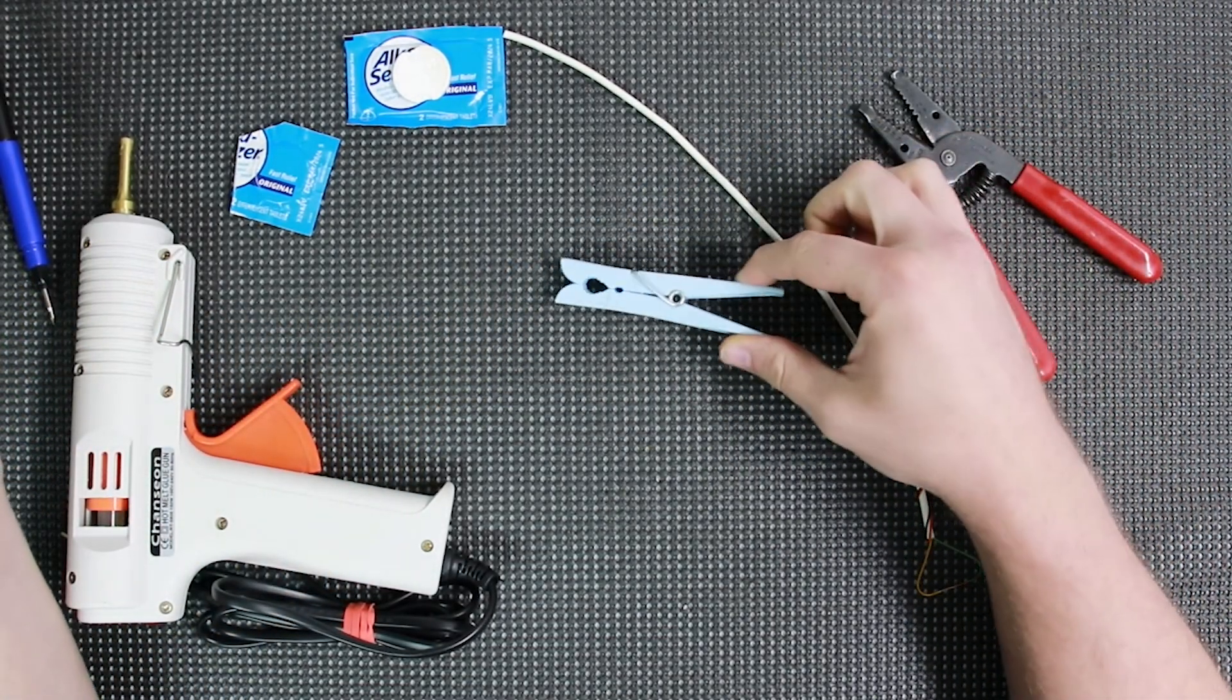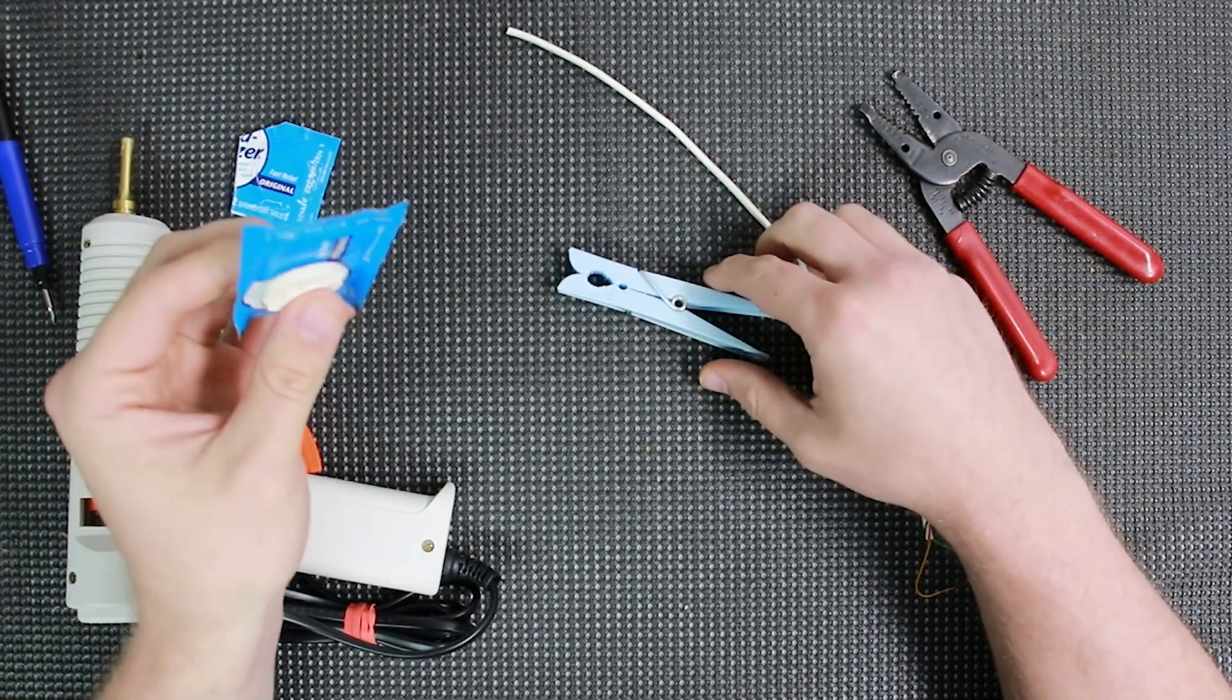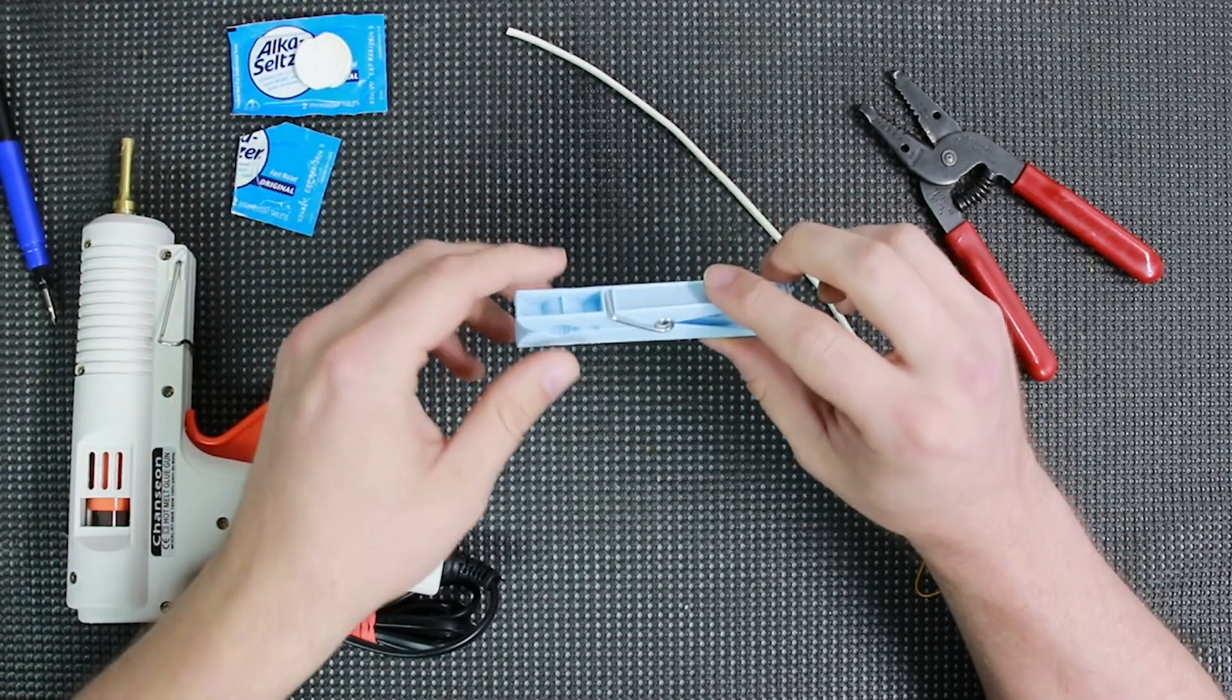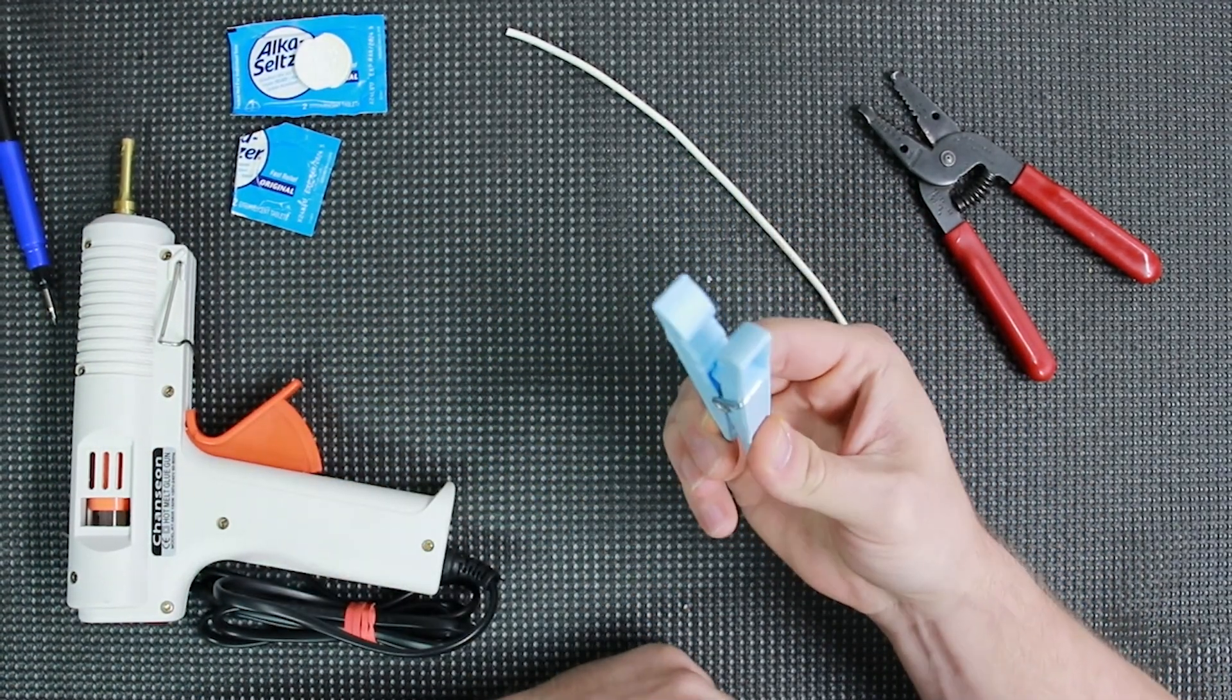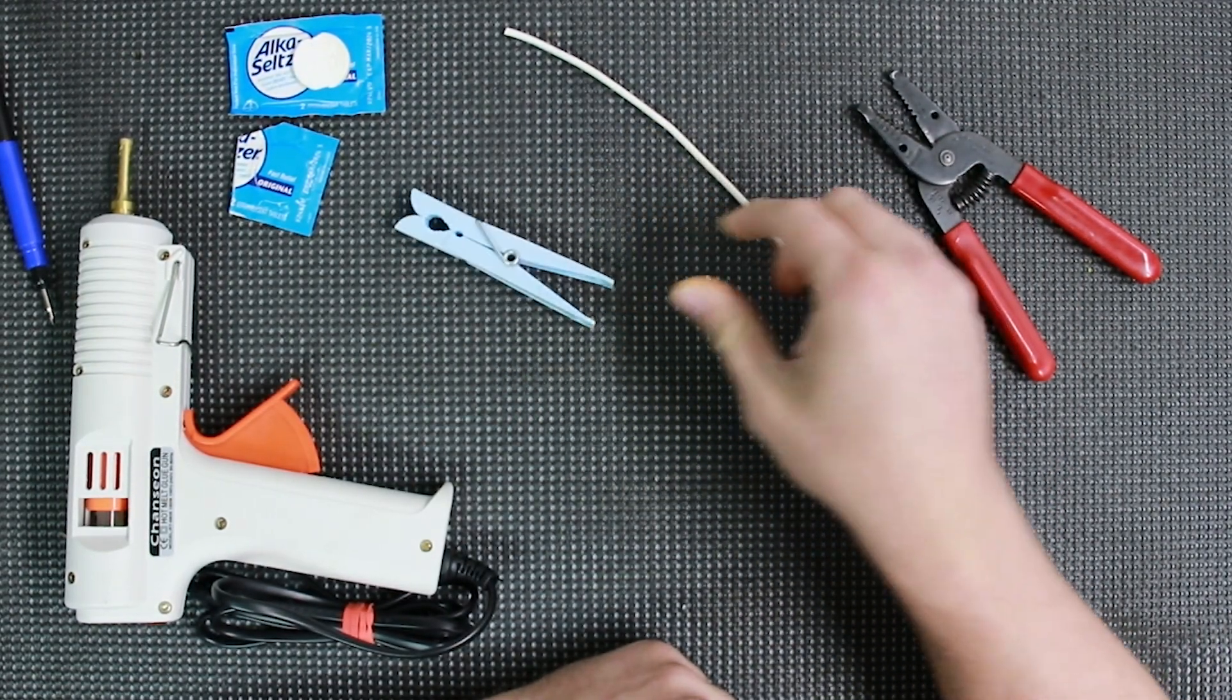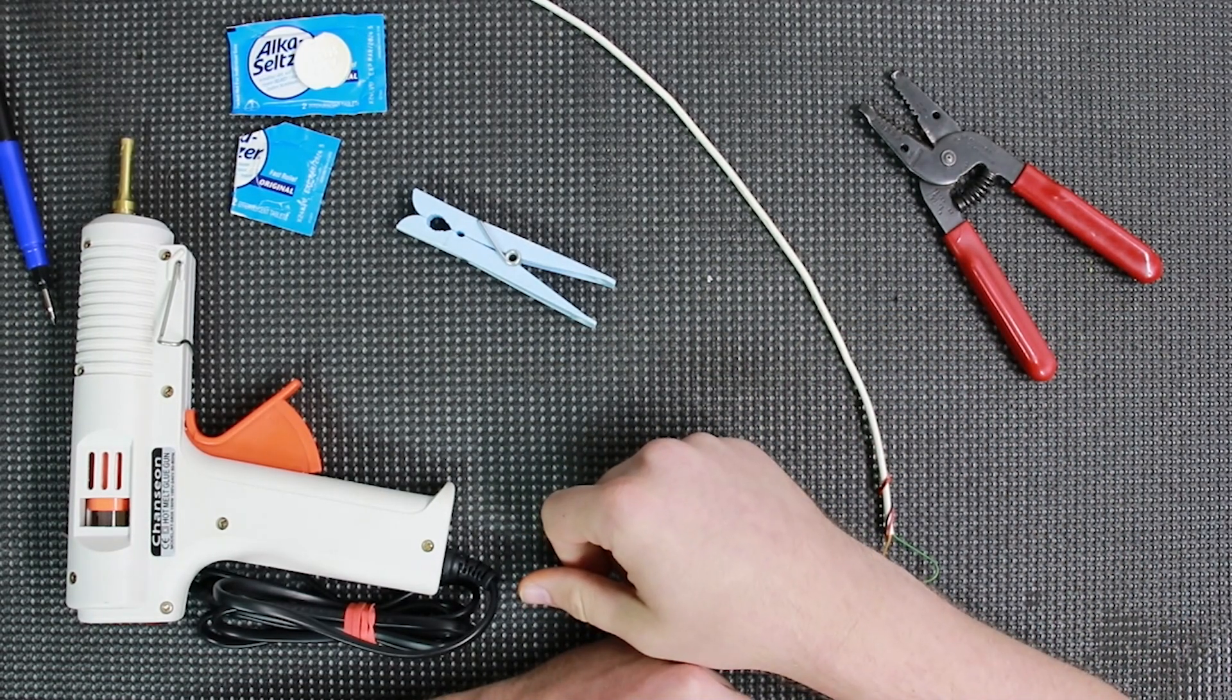And as you can see, most of these components are just things that you may have lying around. All I have here is Alka-Seltzer tablets, a clothespin, some wire, and then a hot glue gun to make everything stick together.